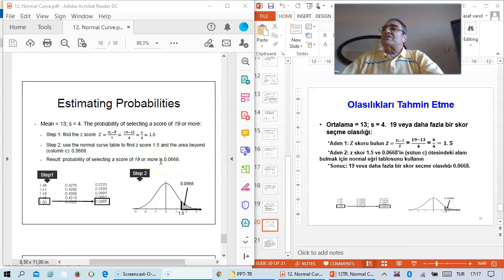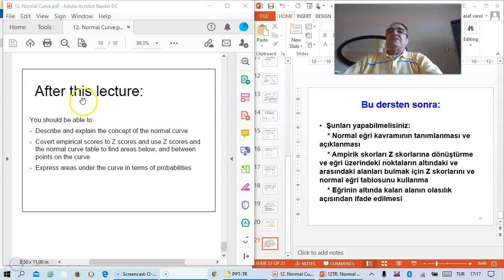After this lecture, you should be able to: describe and explain the concept of the normal curve; convert empirical scores to z-scores and use z-scores and the normal curve table to find areas below and between points on the curve; and express areas under the curve in terms of probabilities.